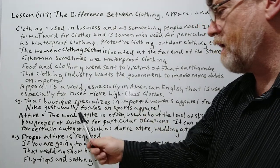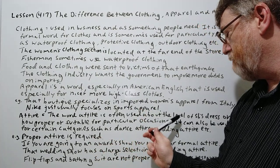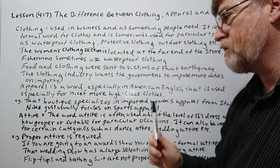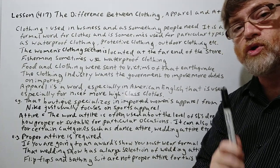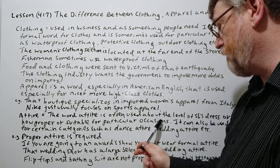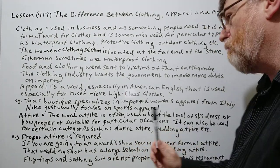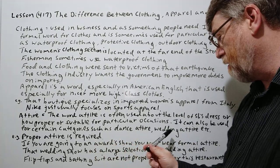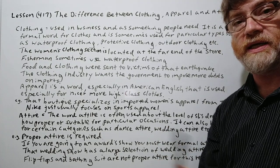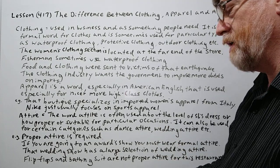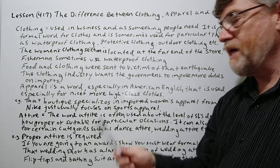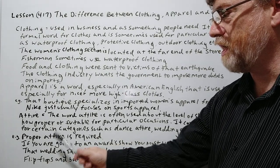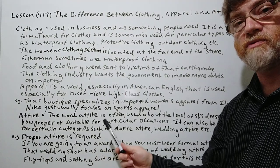Attire. The word attire is often used about the level of somebody's clothes or dress — how proper or suitable for particular occasions. It can also be used for certain categories such as dance attire, wedding attire, etc. This is probably the most common example you will hear: when you enter a restaurant, they may have a sign that says 'proper attire is required,' especially if it's a high-class restaurant that wants men to wear a jacket or tie.